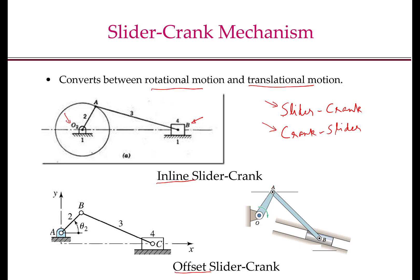The position analysis in the next few slides will be for an offset slider mechanism. However, the general procedure can also be applied to offset slider crank mechanisms of other forms, which we will see in the homework. If the offset is 0, then we have the inline slider crank mechanism, so the analysis of the offset slider crank mechanism holds for the inline case with offset equal to 0.